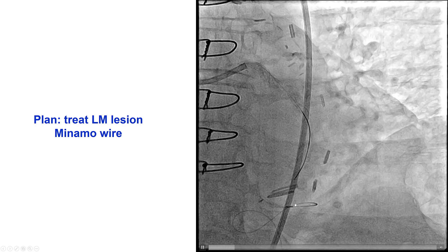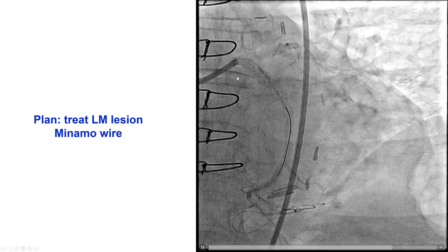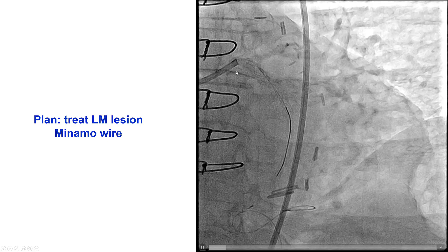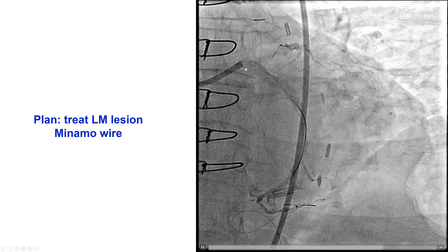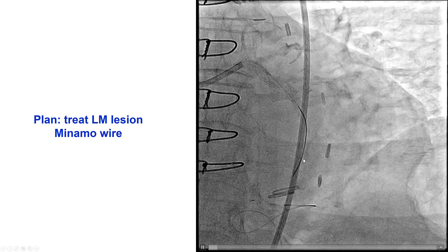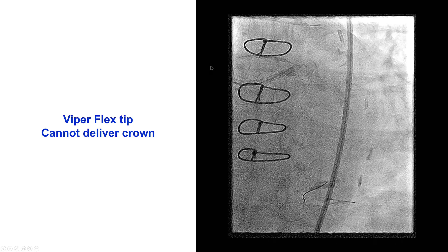We went with femoral access, a seven French EBU-3.75 guide, and were able to wire with difficulty using a MINAMO guide wire. We advanced a VIPER flex-tip wire with a plan to proceed with primary orbital atherectomy, since we knew that the proximal circumflex stent was underexpanded.